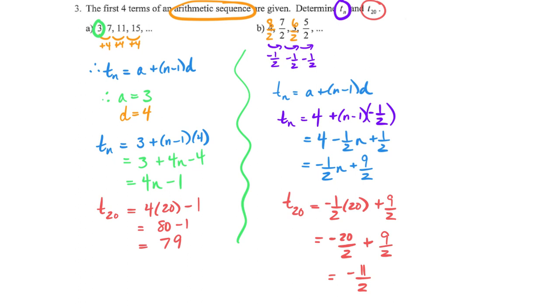Now that we have that general term, we can find term 20. Subbing in 20 for N — that cross reduces to negative 20 halves — and when I subtract from 9 halves I already have a common denominator, giving me term 20 equals negative 11 halves. We've followed the instructions and answered both parts.